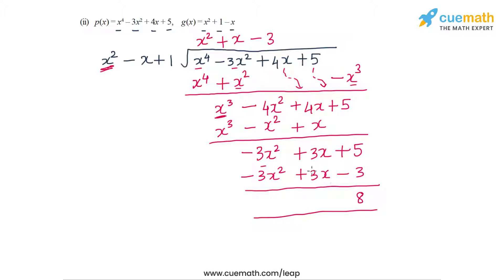The division process terminates, which means the quotient polynomial is x² + x - 3 and the remainder polynomial is the constant 8. That completes Part 2.